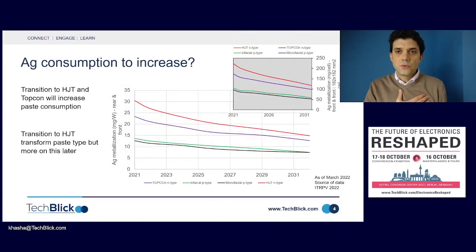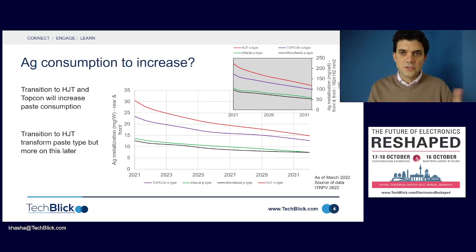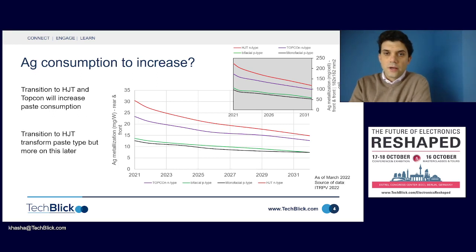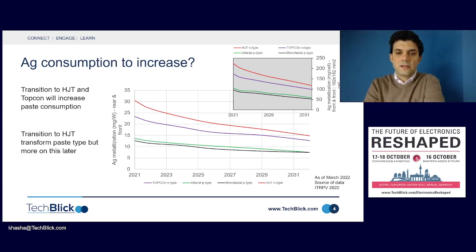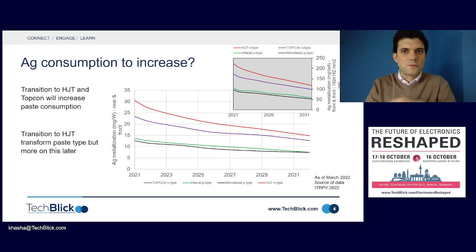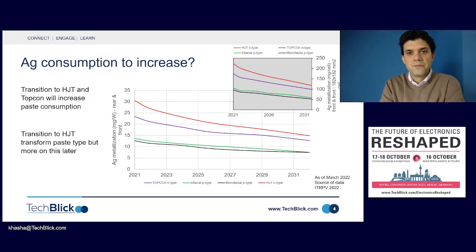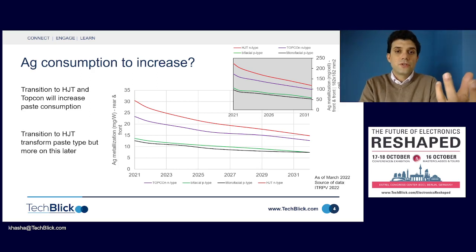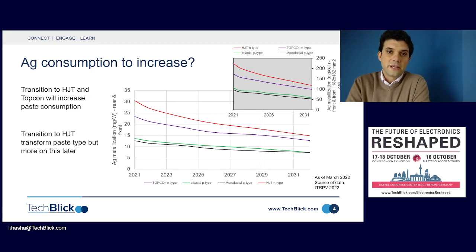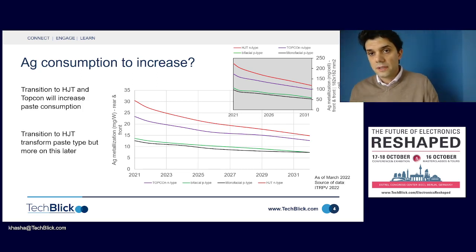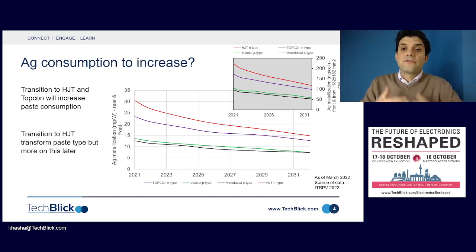The amount of silver used depends on the solar technology type. For well-established technology today, it's around 12 milligrams per watt for front and back metallization, and this will continue to reduce. Printing ever narrower yet more conductive lines with good uniformity, no height variation, and good adhesion is really an art. Newer generations like TopCon N-type or heterojunction cells may actually require more paste per watt and different types of inks.